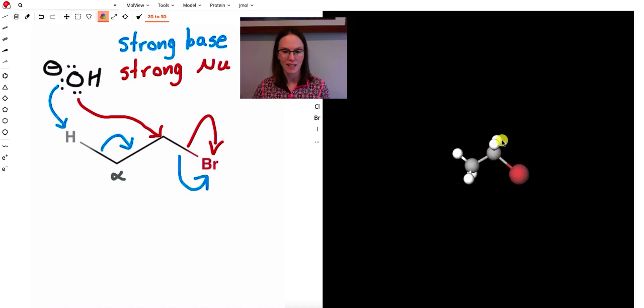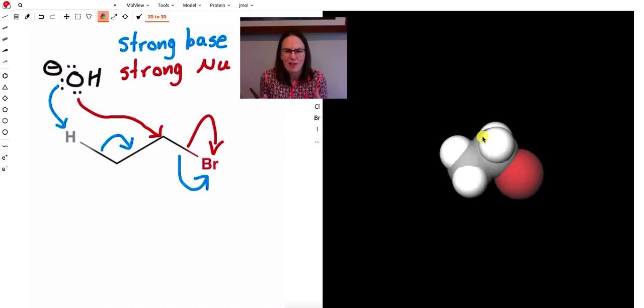If you look over on the right-hand side, those darker gray balls represent the carbon atoms. The red larger atom is the bromine, and the smaller white light gray spheres represent the hydrogen atoms. Okay, and we can rotate this around and look at it from different angles. We can also look at it from a space-filling perspective.